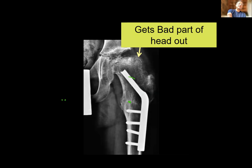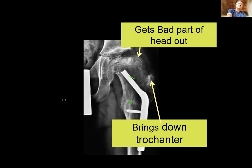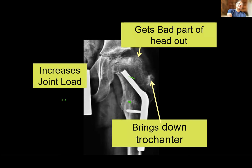Advantages of valgus osteotomy: gets the bad part of the head out of the weight-bearing zone, increases range of abduction, stops pain, brings down the trochanter, improves the lurch, and adds leg length. Disadvantages: increases joint load, and if the remaining femoral head is small, instability or subluxation can occur. Planning with an X-ray in full adduction is essential before proceeding.